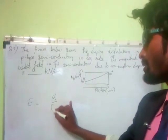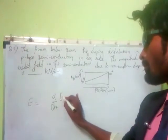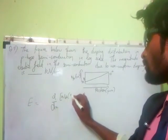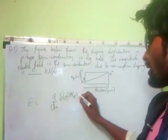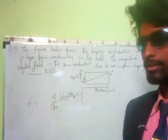We go for d by dx of Na of x. Actually, before this one you have to go for ln of Na of x. That should be done.